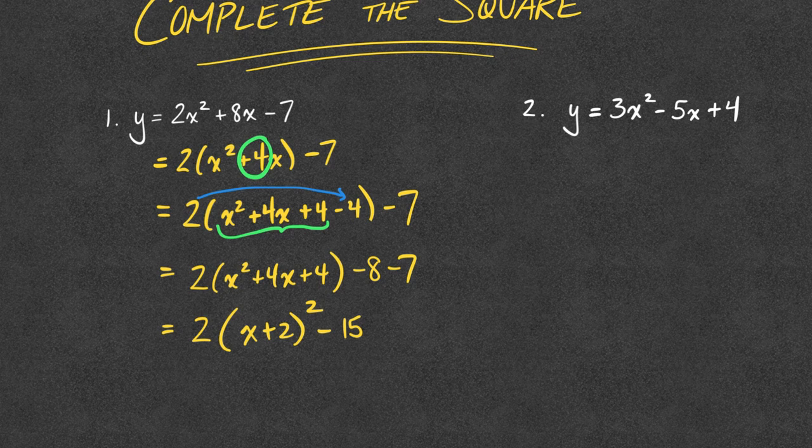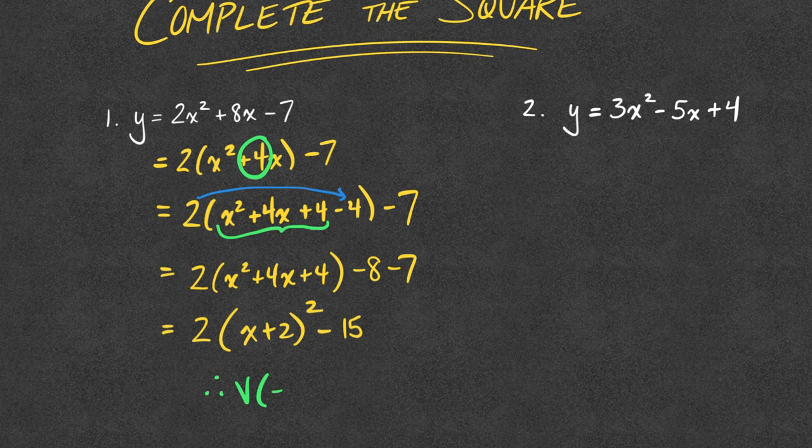Now, what I can do is factor my perfect square trinomial and simplify on the outside. So, if I had to find the vertex of that parabola, I now have that vertex being at negative two, negative 15. And I can see it from vertex form. That is completing the square.